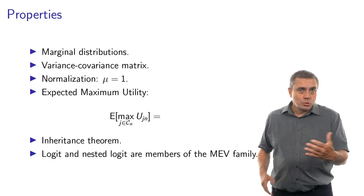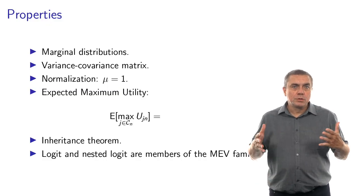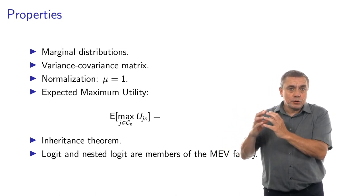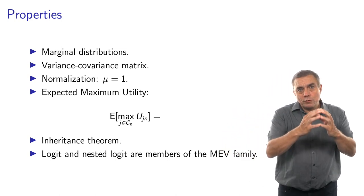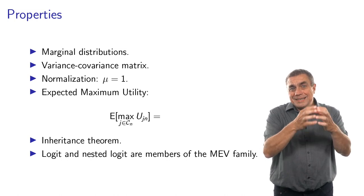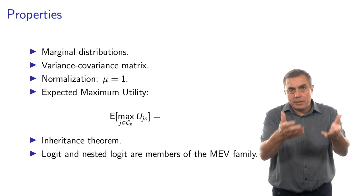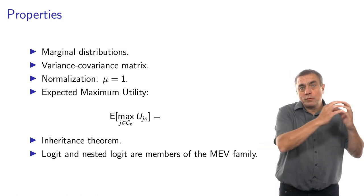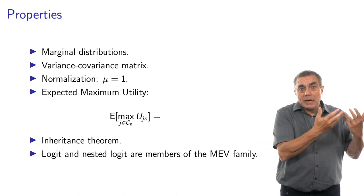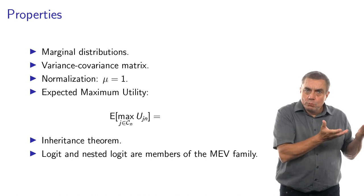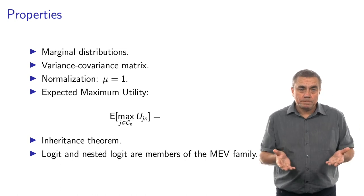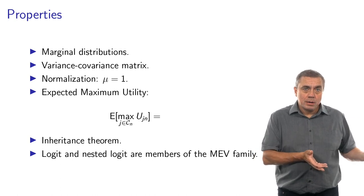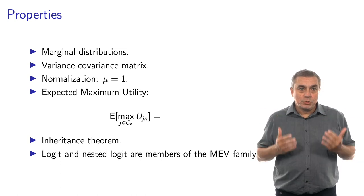In the technical documents, you will see how we proceed through this process. We start from capital G, the generating function, plug it into the formula to obtain the CDF of the multivariate extreme value distribution, then plug this CDF into the formulation for the choice model and obtain the formula for the multivariate extreme value model. We see that it has a closed form and a format which is logit-like.